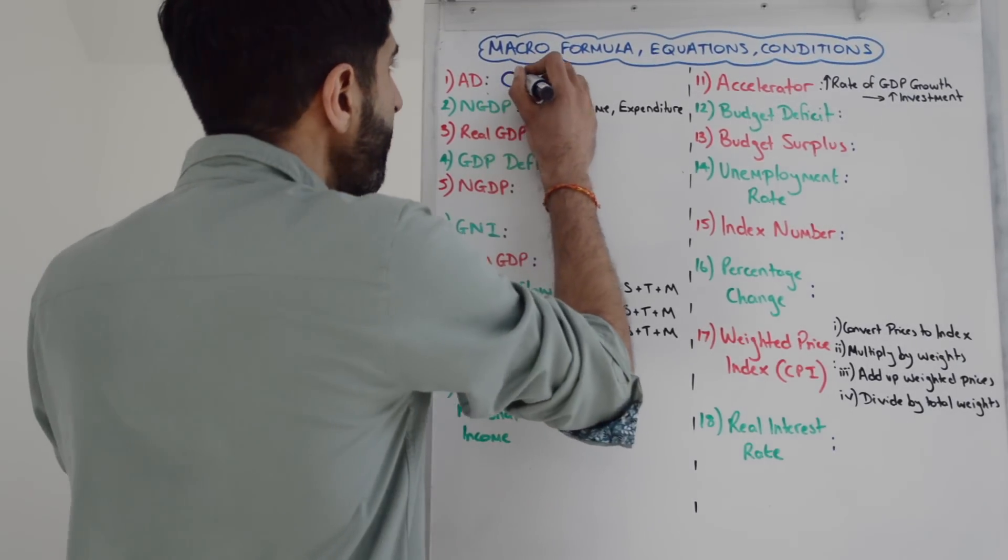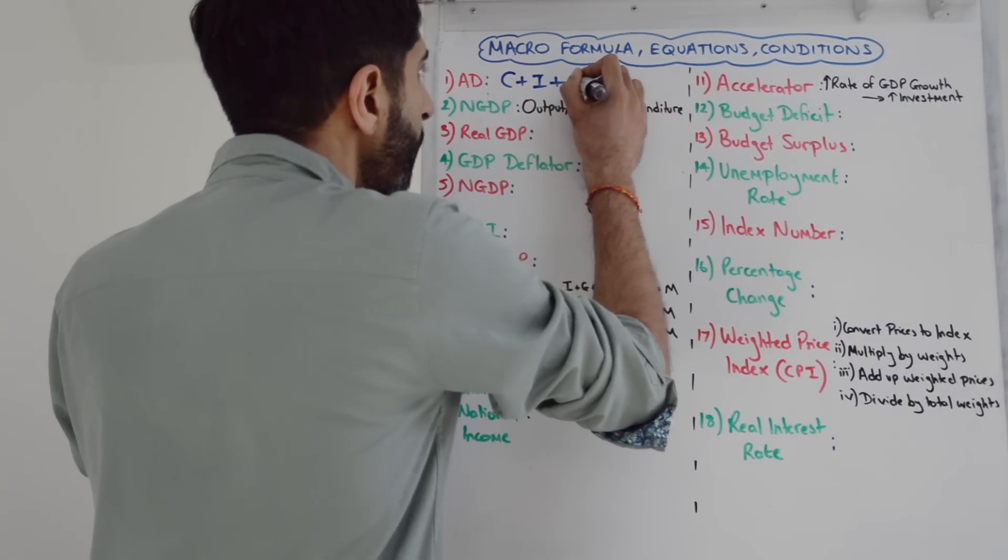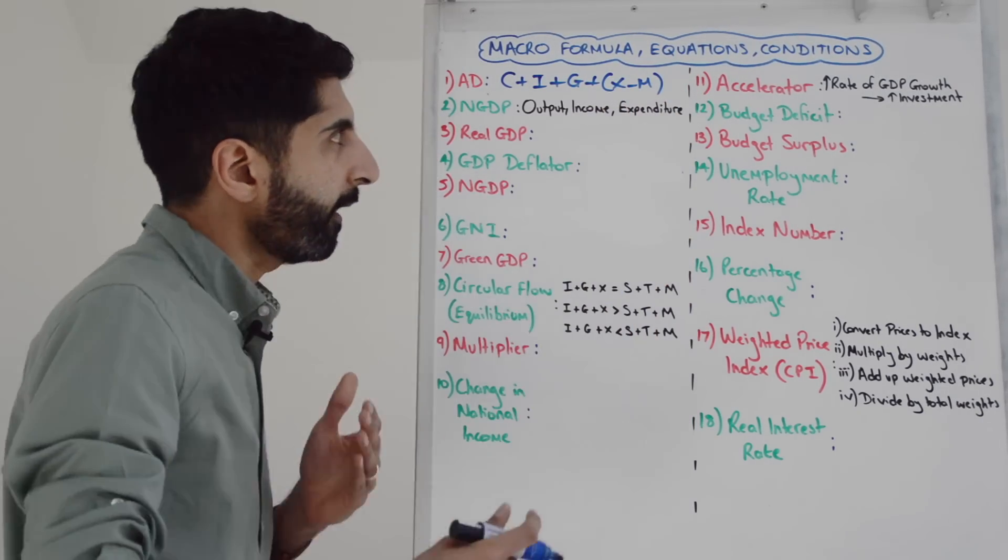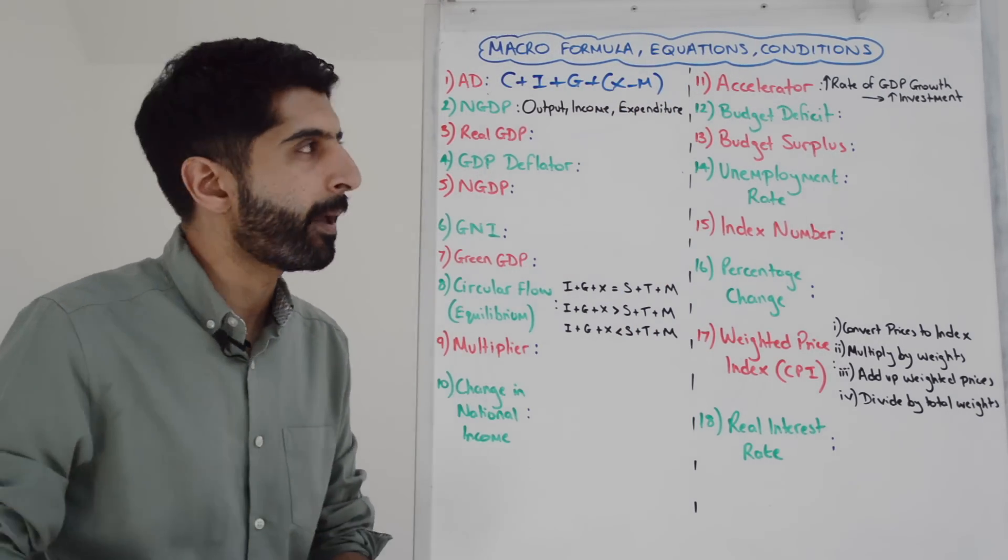Let's dive straight in with aggregate demand. So AD, simple equation: C plus I plus G plus X minus M. That is consumption plus investment plus government spending plus net exports.